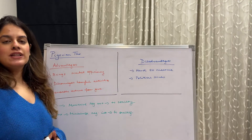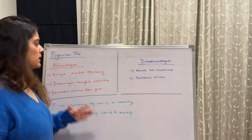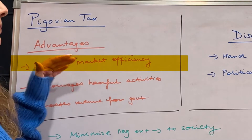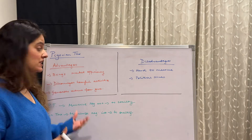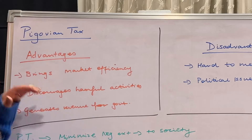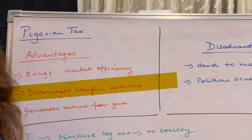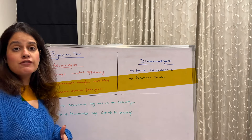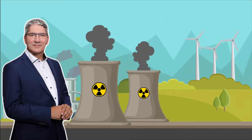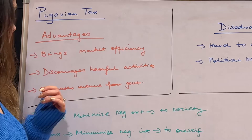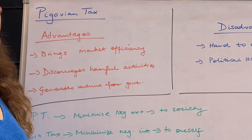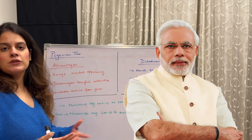Moving ahead to the advantages and disadvantages. The biggest advantage is that it brings market efficiency, as explained through the diagram. Secondly, it discourages harmful activities — for example, a producer generating a lot of carbon emissions will have a carbon tax imposed, so they will try to reduce those emissions. Thirdly, it generates revenue for the government through these Pigovian taxes.